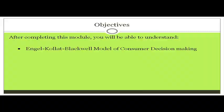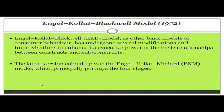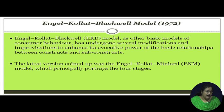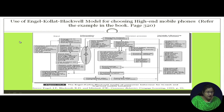Welcome. In this session we will discuss the Engel-Kollat-Blackwell model of consumer decision making, also known as the grand model of consumer decision making. Like other contemporary models, the EKB model has undergone several modifications and improvisations to enhance its explanatory power of the basic relationships between the constructs of consumer decision making. The latest version is the Engel-Kollat-Manyard model, which principally portrays four stages, similar to the watershed model.